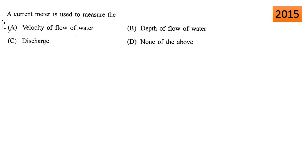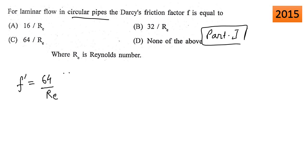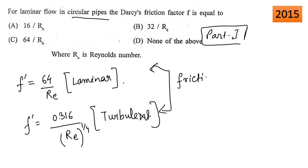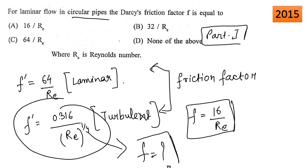A current meter is used to measure the velocity of flow of water — option A. This next question was already discussed in part 1. The friction factor F equals 64 by Re where the flow is laminar. For turbulent flow, the friction factor is 0.316 divided by Re to the power 1/4.